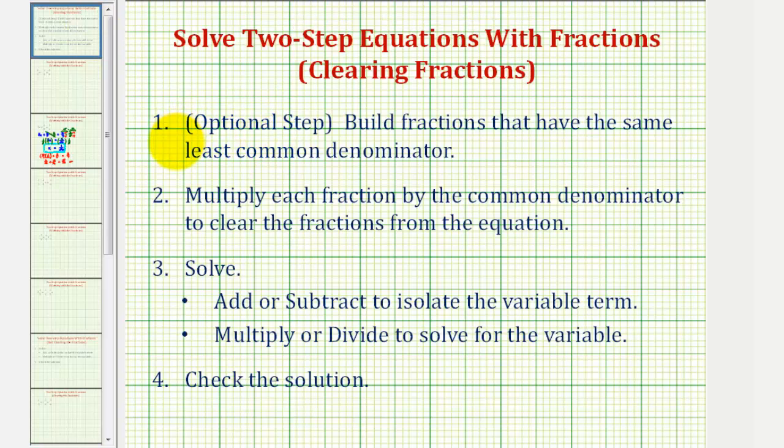The steps are: Number one, which is optional, build fractions that have the same least common denominator. Number two, multiply each fraction by the common denominator to clear the fractions. Then add or subtract to isolate the variable term, multiply or divide to solve for the variable, and finally check our solution.